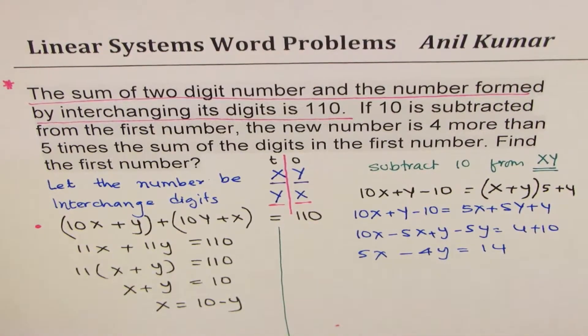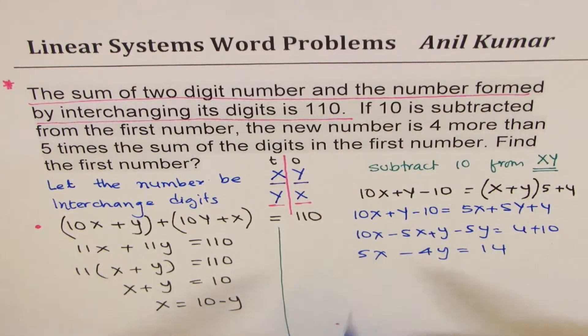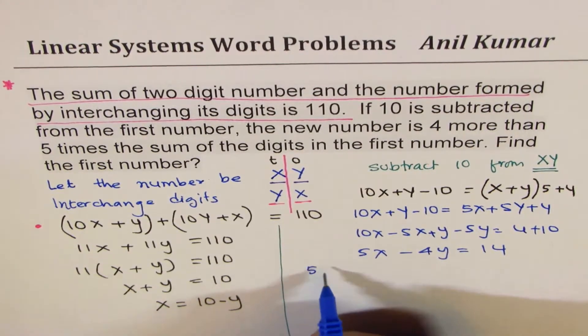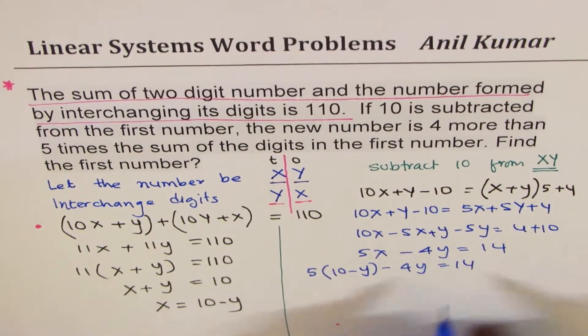So we have the second equation. Now we could do substitution or elimination. Well, since I wrote x equals to 10 minus y, let me substitute that here now.